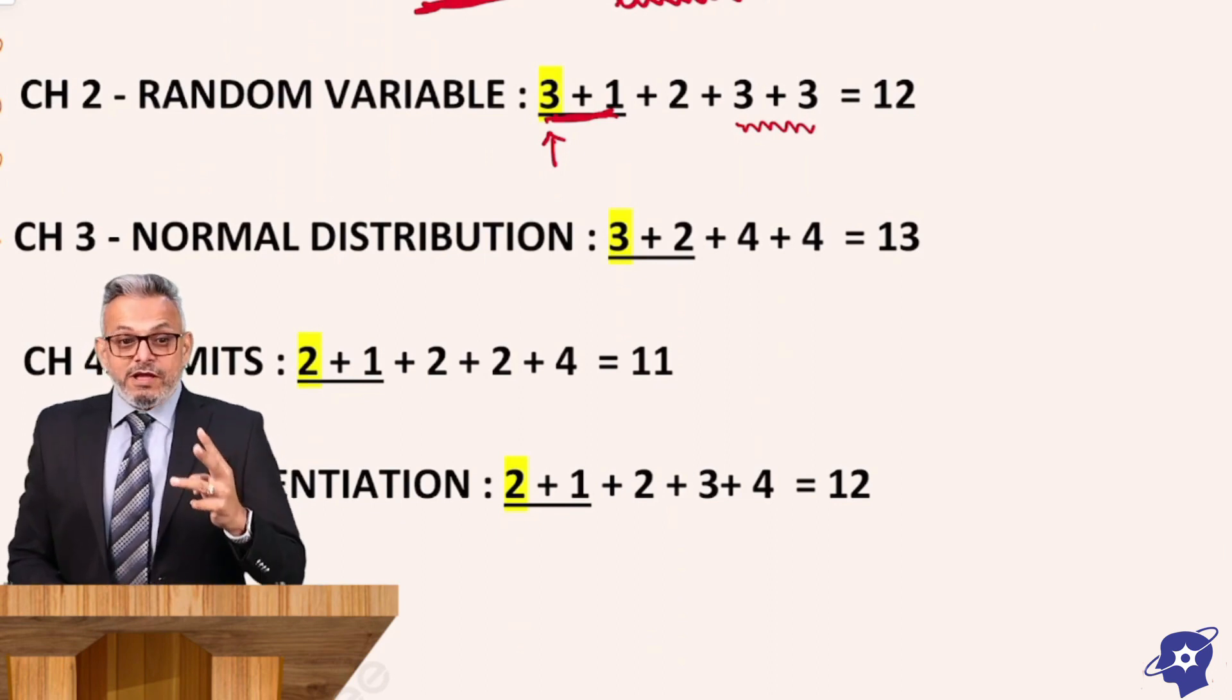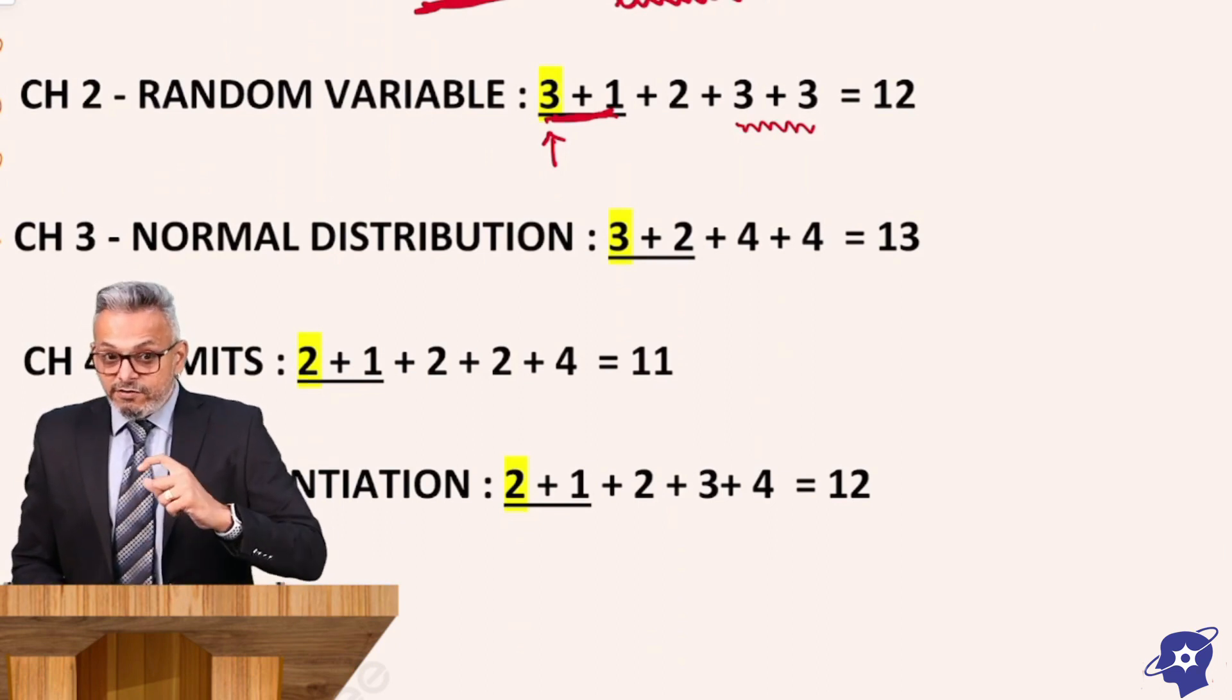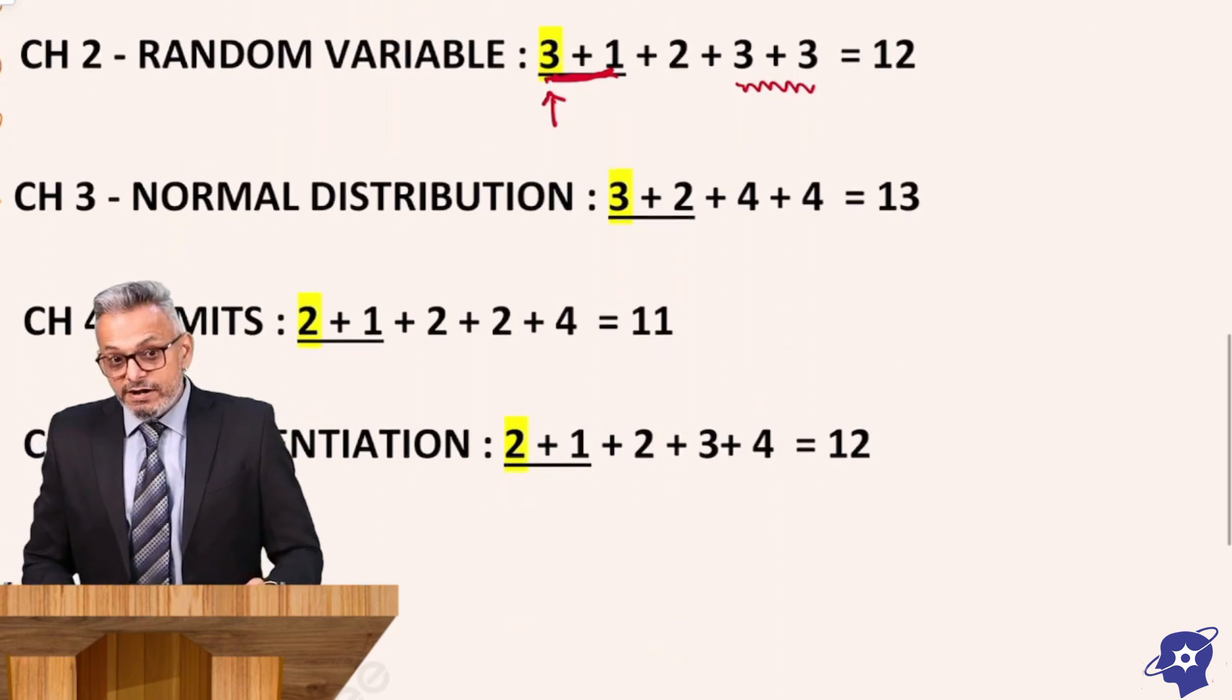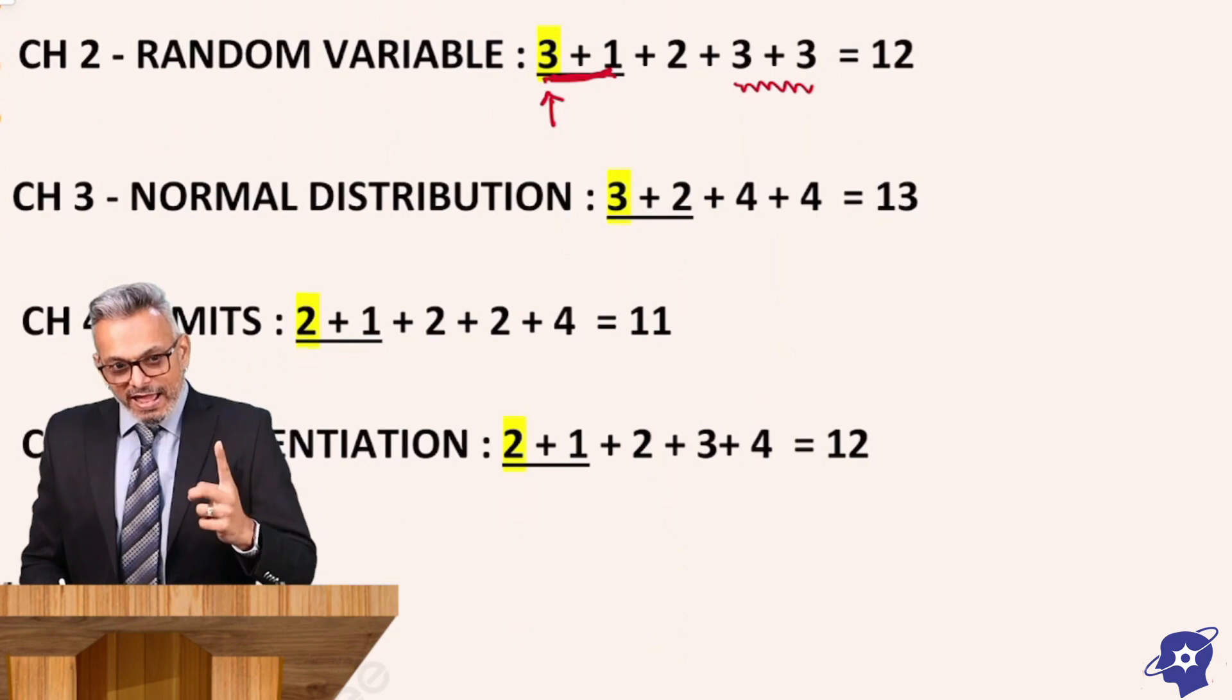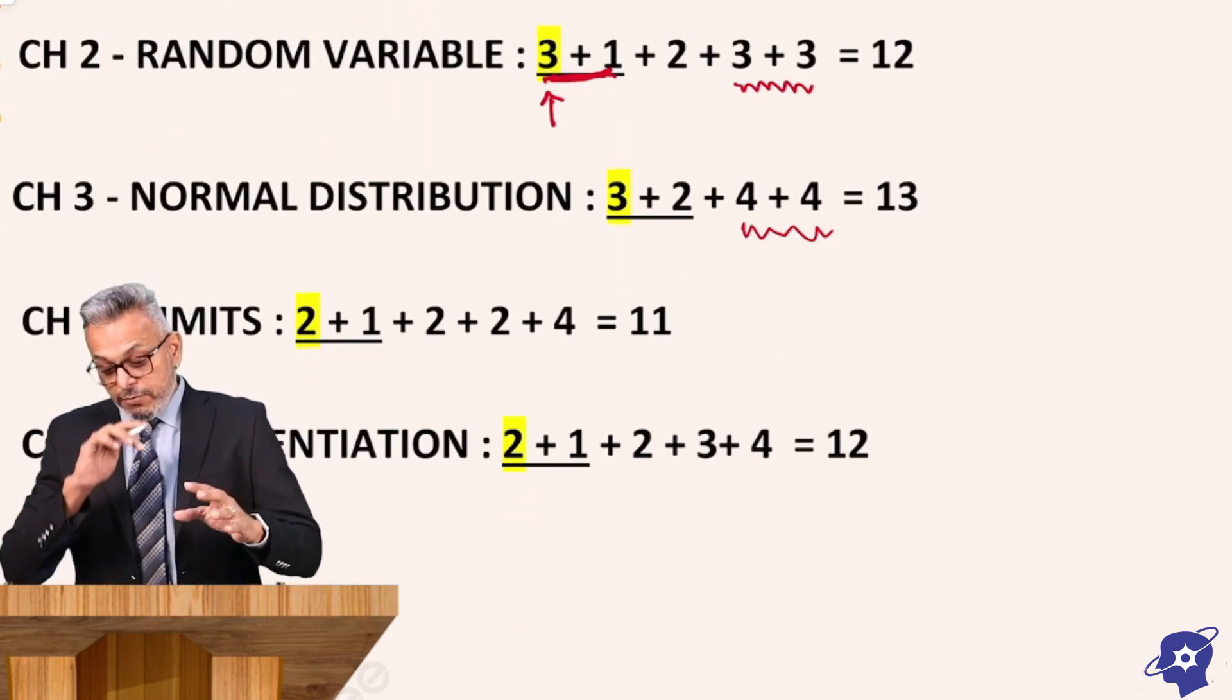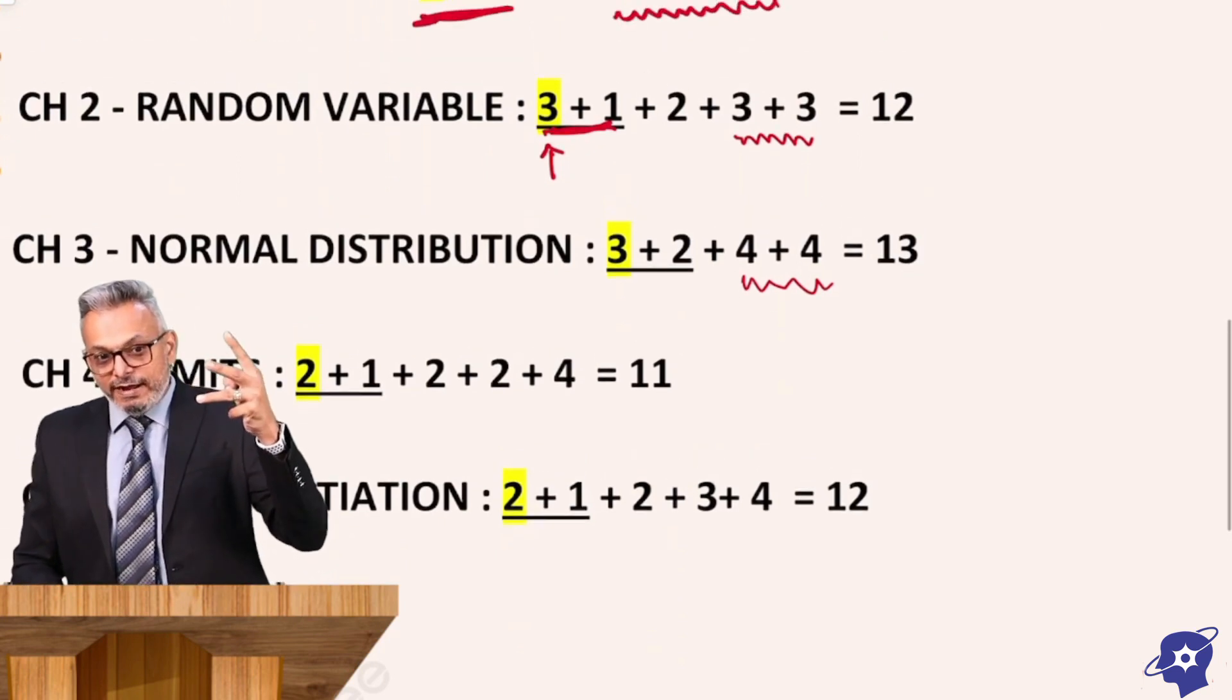Normal Distribution, that is chapter 3. All these 3 chapters are not going to end in 12th standard. They are going to come in your further academic courses also. This can come for CA course, for entrance exam preparation, for BBA, even for MBA. So these 3 are important chapters. Normal Distribution again 3 + 2. Now 3 is 3 multiple choice questions plus 4 + 4. So 3 + 2 is 5, 6, 7 - seven questions and 13 marks. All these 3 chapters which are connected are done.